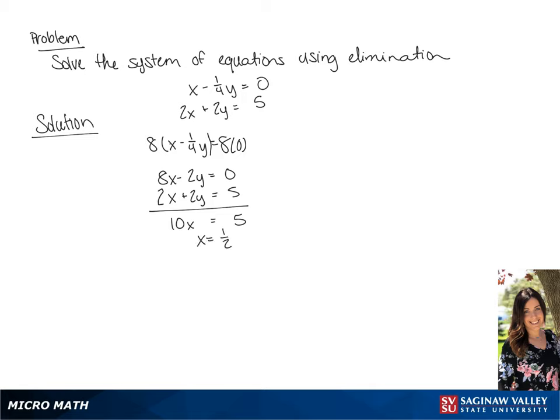Now if we plug 1 half into the second equation, we get 2 times 1 half plus 2y equals 5.